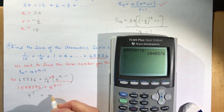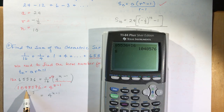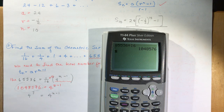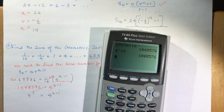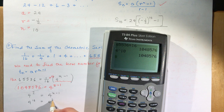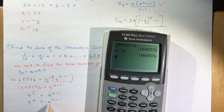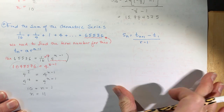There are ways to solve these using logarithms, but since you haven't learned that, you want to figure out what power of 4 gives you 1,048,576. If you guessed long enough, the answer is 4 to the power of 10 — that gives 1,048,576. So 4 to the power of 10 equals 4 to the n minus 1. Because the bases are the same, 10 equals n minus 1, so n equals 11.